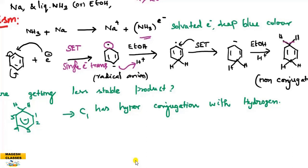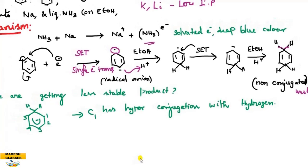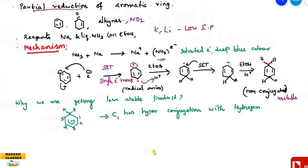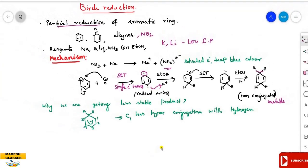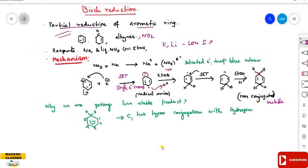The proton source - ethanol - then gives the reduced hydrogen. The product is non-conjugated and unstable, giving a partial reduced product. This is Birch reduction: partial reduction of the aromatic ring like benzene. It also reduces alkynes into alkenes. The solvated electron adds to the benzene nucleus, then the proton supplied by ethanol gives the non-conjugated unstable product.